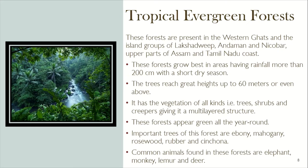These forests have vegetation of all kinds — trees, shrubs, and creepers — giving them a multi-layered structure. They appear green all year round. Important trees of this forest are ebony, mahogany, rosewood, rubber, and cinchona. Common animals found in this forest are elephant, monkey, lemur, and deer.